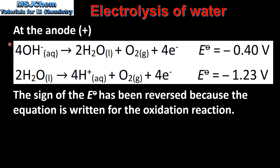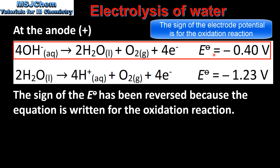Next we look at the two possible reactions that could take place at the anode. The first reaction is the oxidation of hydroxide ions to form oxygen gas, and the second is the oxidation of water to also form oxygen gas. The sign of the electropotential values has been changed from positive to negative because these equations are written for the oxidation reactions. At the anode, the reaction with the more positive electropotential will take place, therefore we'll have the oxidation of hydroxide ions to form oxygen gas.